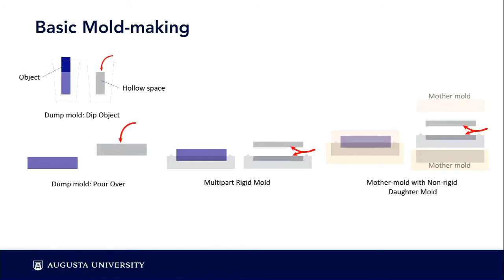Let me talk about basic mold making. The dump mold uses alginate or silicone in a cup — you place your object in and the hollow space creates a cavity for wax or silicone to be poured into. Another option is creating a brick wall around the object and pouring material over it — best for objects where you only need detail on one side. If you need detail on both sides, you make a two-part mold: embed the object in clay, pour material over it, flip it, and do the same on the other side.